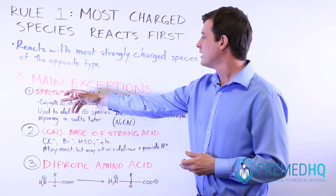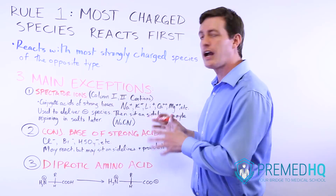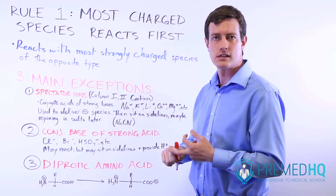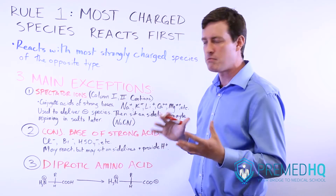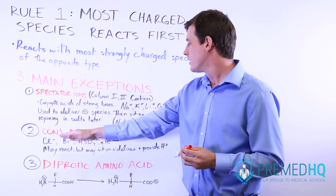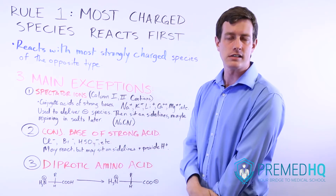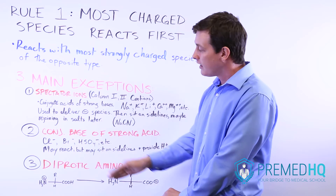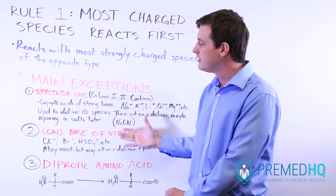To summarize exceptions one and two: spectator ions — conjugate acids of strong bases like Na+, K+, Li+, Ca2+, and Mg2+ — and conjugate bases of strong acids like Cl-, Br-, and HSO4- are all examples of charged species that may not be the most immediately reactive species in your organic chemistry environment.